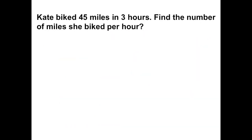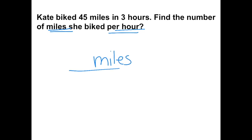Kate biked 45 miles in three hours. Find the number of miles she biked per hour. When it says 'per,' we know we're finding the unit rate. We want to find miles per hour, so the number of miles goes on top of the fraction and hours on the bottom.